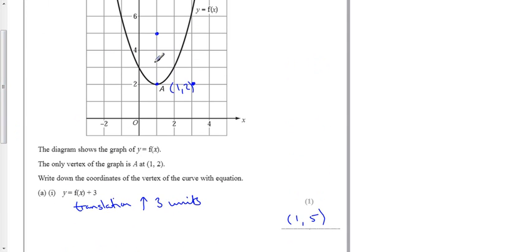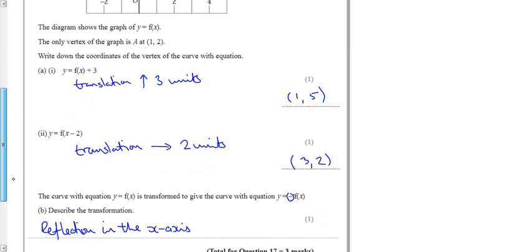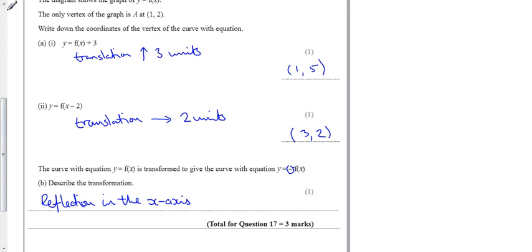And it's a reflection in the x-axis. That means anything above the axis goes below the axis. So it's actually going to be a U shape down here like that. Okay, so reflection in the x-axis. If you need to, go and look up transformations of graphs.